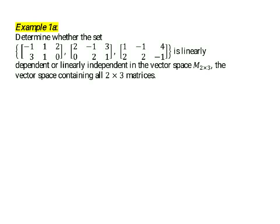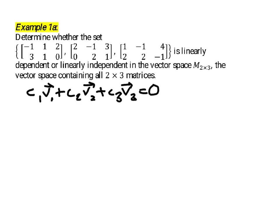In this example we're asked to determine whether a collection of three specific two-by-three matrices is a linearly dependent or linearly independent set. Our definition for linear independence is whether the equation C1 times vector 1 plus C2 times vector 2 plus C3 times vector 3 equals the zero vector has only the trivial solution, where all scalar coefficients are zero. If the only way to get this sum equal to the zero vector is to make all scalars zero, then the vectors are linearly independent.